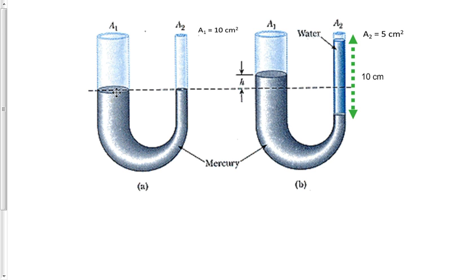Initially, mercury in the tube only, and there is atmospheric pressure pushing down on both sides. Therefore, the pressure is equal on both sides, so we have a level amount of mercury on both sides.